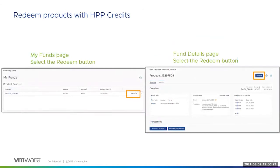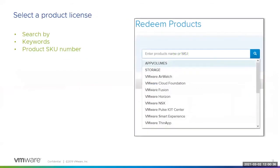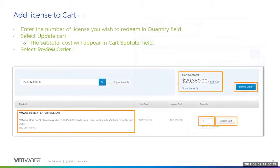To redeem products, access the My Funds or Fund Details page after logging into your Customer Connect account. Redeem licenses with HPP credits from the products fund by selecting the Redeem button on either page. Search by keyword or product queue number and then make a selection from the drop-down list of search results. On the Redeem Products page, the product license you selected will display. In the quantity field, enter the number of licenses needed. Select the Update Cart button and the order amount will display. In the cart totals field, select the Review Order button.